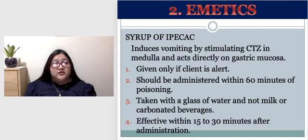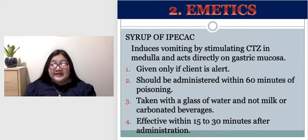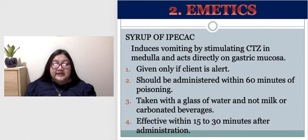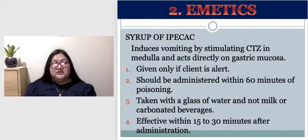The drug that actually induces vomiting is syrup of ipecac. It induces vomiting by stimulating the chemoreceptor trigger zone in the medulla and acts directly on the gastric mucosa. It should only be given if the client is alert. It should be administered within 60 minutes of poisoning, taken with a glass of water — not milk or carbonated beverages, as these reduce its absorptive capacity. It is effective within 15 to 30 minutes after administration.